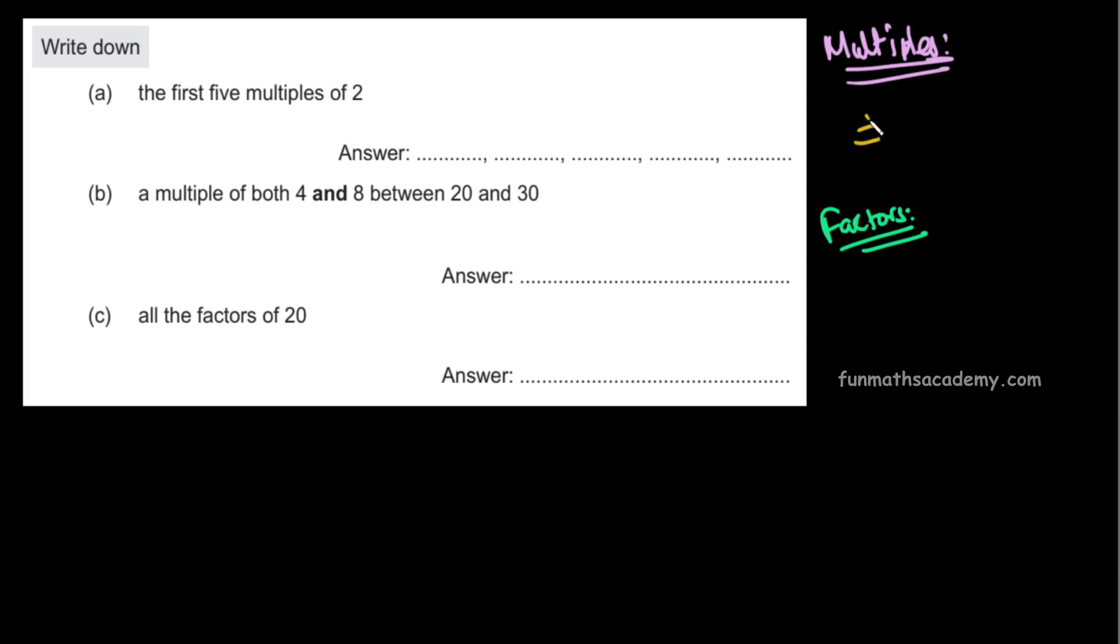How do you find multiples of a number? It's where you multiply by natural numbers. You know what natural numbers are: 1, 2, 3, 4, 5, and it goes on. Correct?